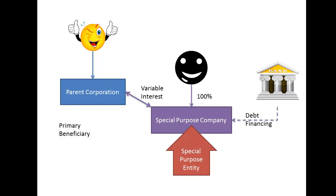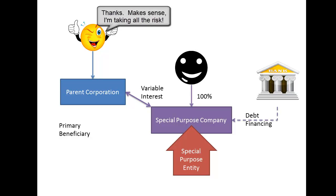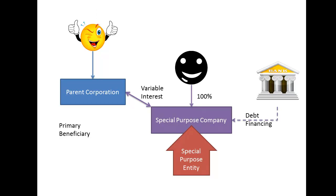Given the exposure of the parent corporation to the activities of the special purpose company, it's not uncommon for the legal equity owners of the special purpose company to stand aside and allow the primary beneficiary to exercise control. So what we have in substance is that the special purpose company is really an extension of the parent corporation, and as such should be consolidated just like any other subsidiary, at least in principle. This means bringing all the revenues, expenses, assets, and liabilities back onto the consolidated books.